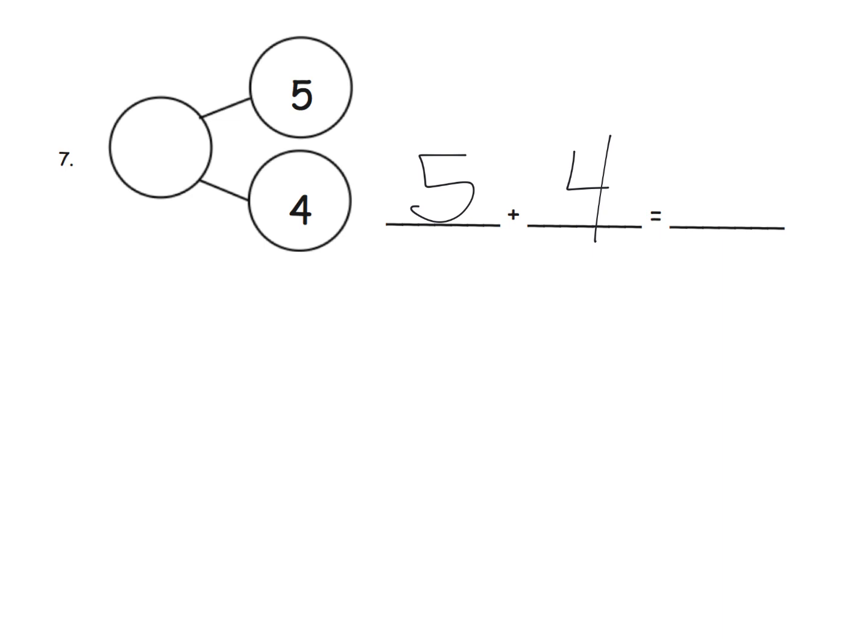We're going to hold our fist and say five, and then count up four spaces: six, seven, eight, nine. I'm holding up four fingers and since I said nine, that means the answer is nine. So our missing value right there is nine.